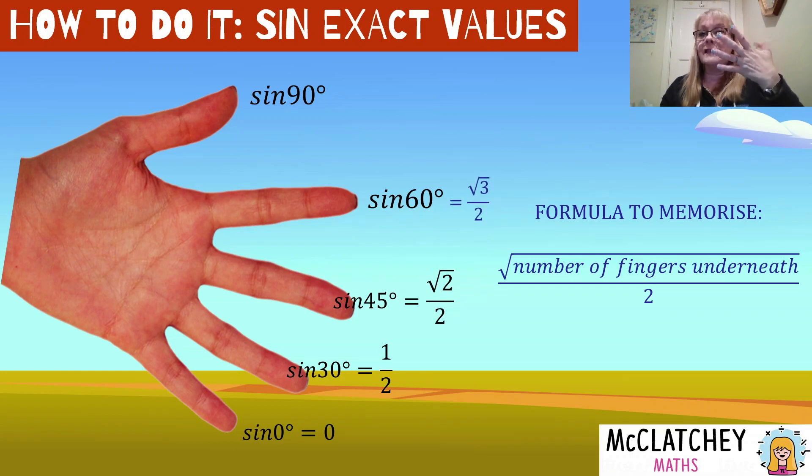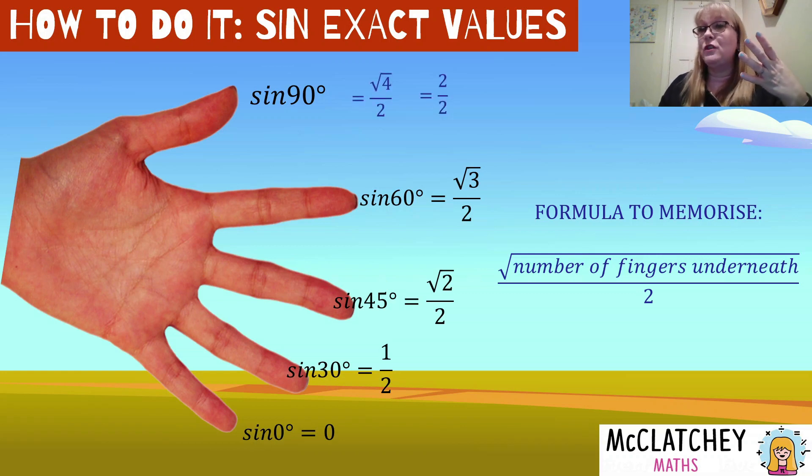And our last one is our sine, our thumb. If we hold our thumb down, we have four fingers underneath, square root of four, which is two over two. So that is going to become two over two, which simplifies as a fraction to just the number one. The sine of 90 is one.